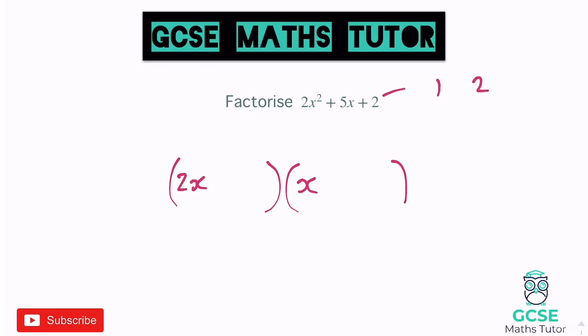If we were to expand this bracket, one of the numbers in the bracket is going to end up getting multiplied by 2, because we have this 2x at the start of the first bracket. So when I look at the numbers 1 and 2, one of them is going to have to double. We could either have 1 not doubling and 2 doubling, which gives us 4, or we could have 2 doubling to give 4 and 2 not doubling. So I've got two options: 1 and 4, or 2 and 2, and I'm going to try and make 5 in the middle.